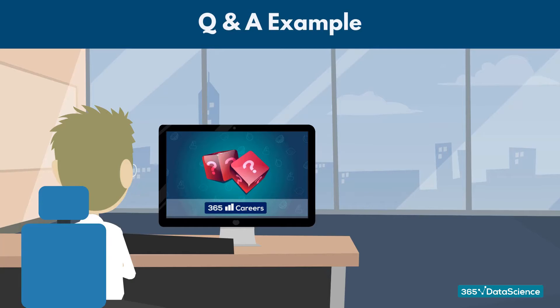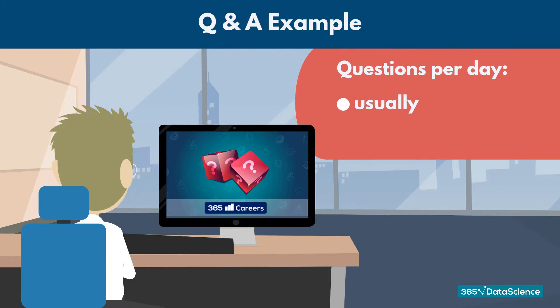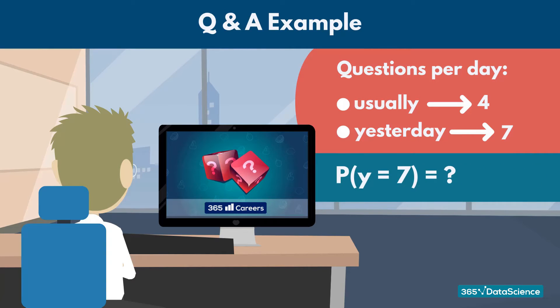Imagine you created an online course on probability. Usually your students asked you around 4 questions per day, but yesterday they asked 7. Surprised by this sudden spike in interest from your students, you wonder how likely it was that they would ask exactly 7 questions.